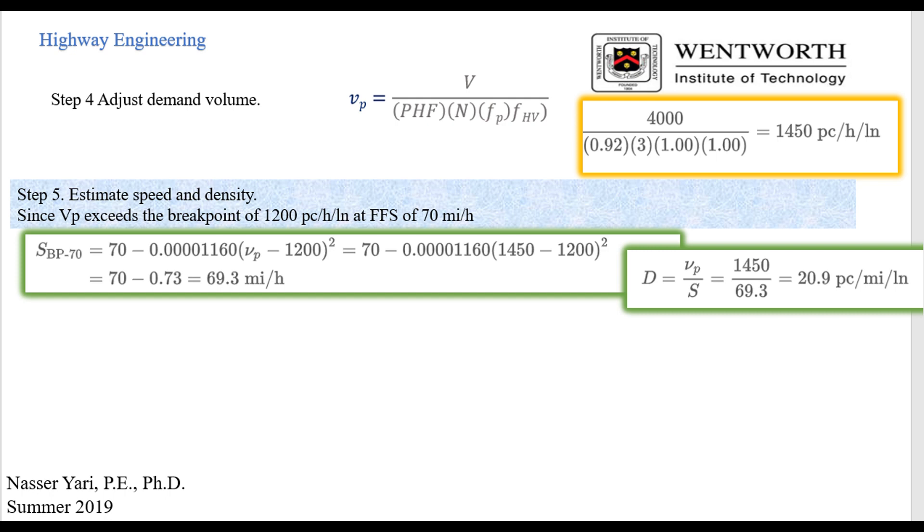Now this number is different than the 1,200 number that we just did in previous step. Therefore, we're going to go ahead, and we're going to use SPP 70. If we go back to the chart that we have all those equations, we're going to use the one for 70 mile an hour, because that was given at the beginning of the problem. So now use 70 mile an hour, and we're going to go ahead and put VP 1450. And then we have 1450 minus 1,200. And our number comes out to 69.3. That's our speed that we're going to use.